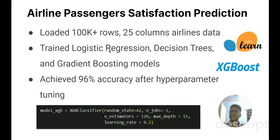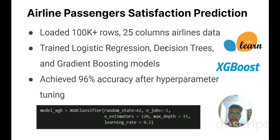This is my machine learning project on airline passenger satisfaction. This dataset from Kaggle consists of nearly 100,000 rows and 25 columns. I performed data analysis and trained various machine learning models to predict whether passengers were satisfied or not. After handling missing values, categorical columns, and scaling the data, I first trained a logistic regression model achieving 87% accuracy. Then a decision tree model reached 95% accuracy. Finally, I trained a gradient boosting model and tuned its hyperparameters, scoring 96% accuracy.